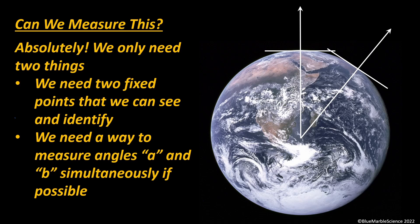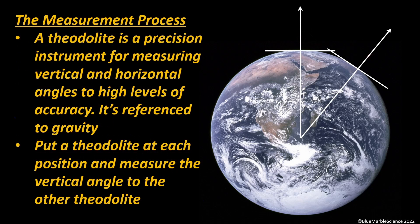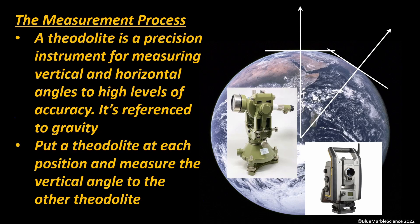Can we measure this? Absolutely. We only need two things: two fixed points that we can see and identify, and a way to measure those angles. We can make that measurement with a theodolite — a precision instrument for measuring vertical and horizontal angles. Professional theodolites make those measurements to a very high level of accuracy. Whether it's an old Wild T3 or a modern Trimble S7, both are referenced to gravity, so the theodolite's vertical reference is the gravity vector — that is your zenith. We put one theodolite at one position, a second at another position, and simply point them at each other and measure those two angles. That's all there is to it.